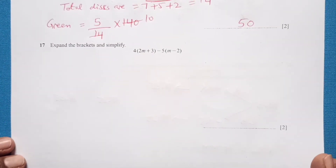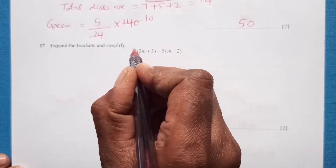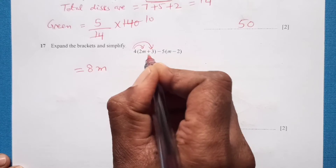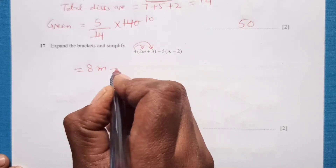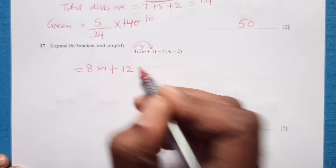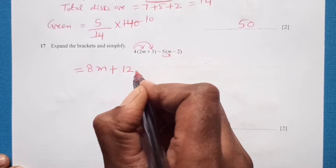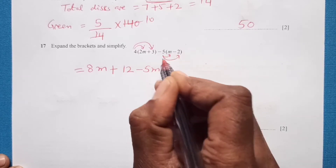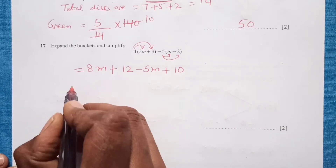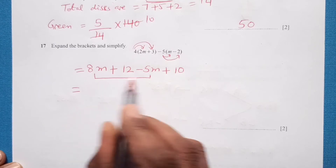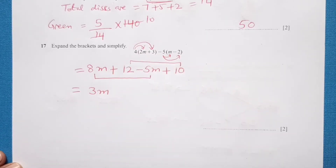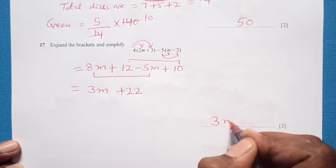Question 17: Expand the brackets and simplify. Multiplying out: 4 times 2m is 8m, plus 4 times 3 is 12. Then we have negative 5m, and negative times negative gives positive 5 times 2, which is 10. Combining like terms: 8m minus 5m is 3m, and 12 plus 10 is 22. The final answer is 3m plus 22.